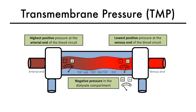The leakiness of the membrane to water depends on the size of the pores within the semipermeable membrane. The leakier the membrane, the higher its KUF or coefficient of ultrafiltration, and the lower the TMP required to attain a certain level of ultrafiltration.